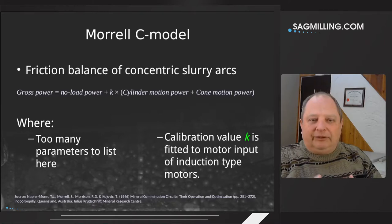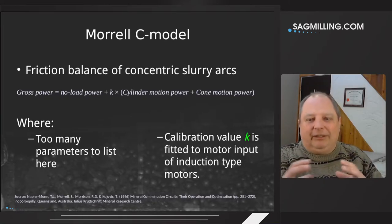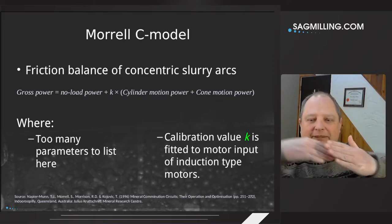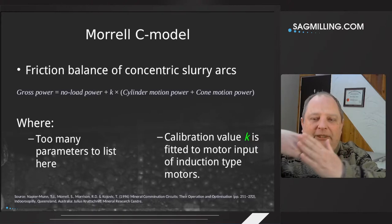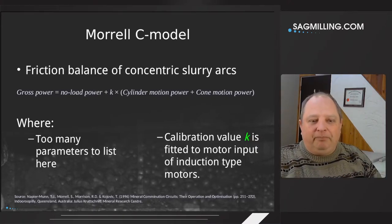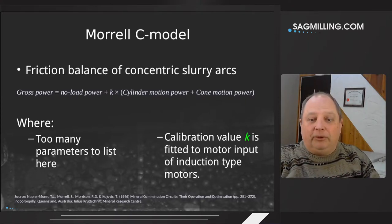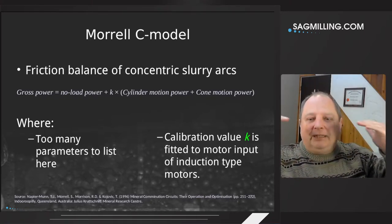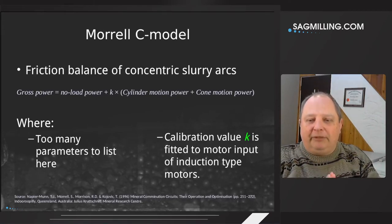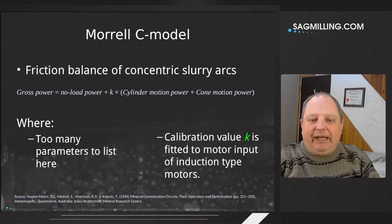The final model is the Morrell C model — by far the most complicated. To distill it to its simplest: it's a friction balance between concentric arcs of slurry stacked up against the side of the mill as it turns. There are way too many parameters to list — it takes up an entire chapter in the reference book. The gross power it estimates, essentially the electrical input power, is based on a calibration value K, which is empirically measured and specifically fit to the motor input power of induction-type motors.